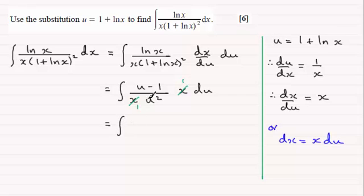To integrate this, what I'm going to do is think of this as u divided by u squared, which would cancel to 1 over u, and then we've got minus 1 over u squared, which is minus u to the minus 2. And I'm integrating both these two terms with respect to u.